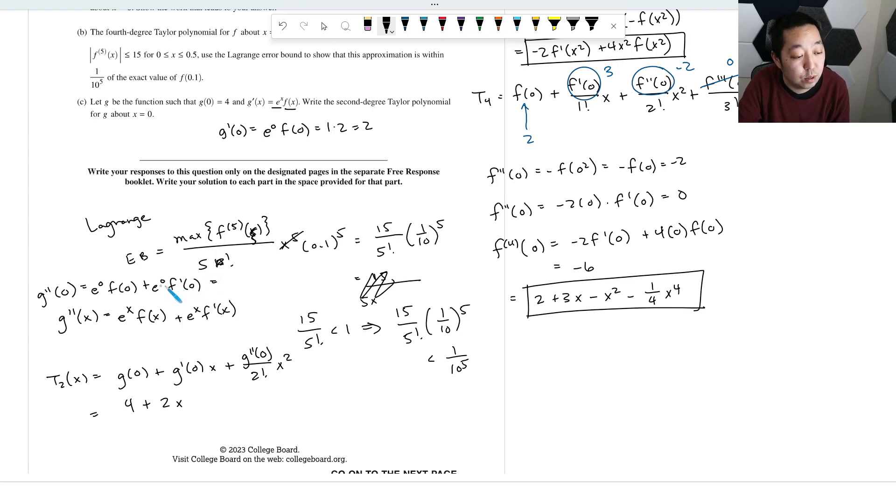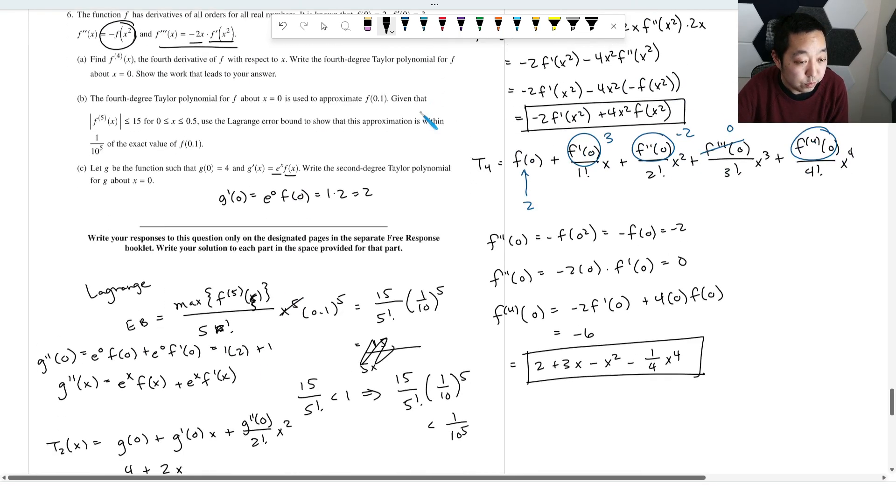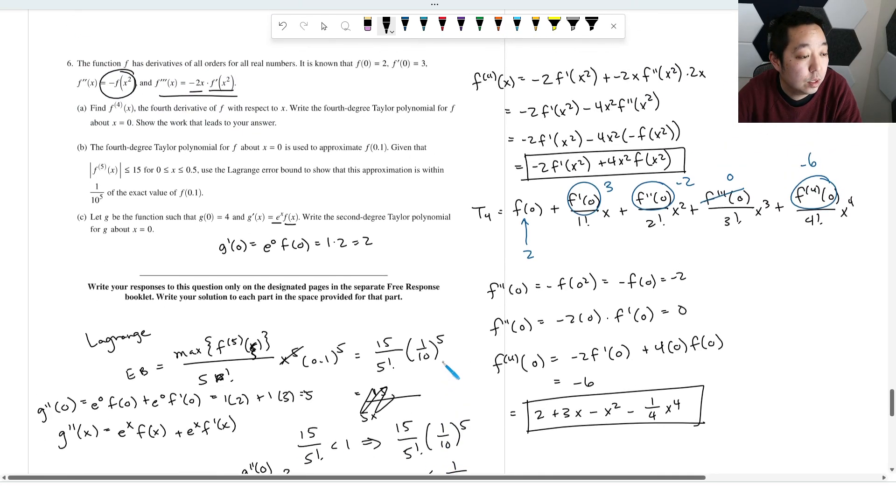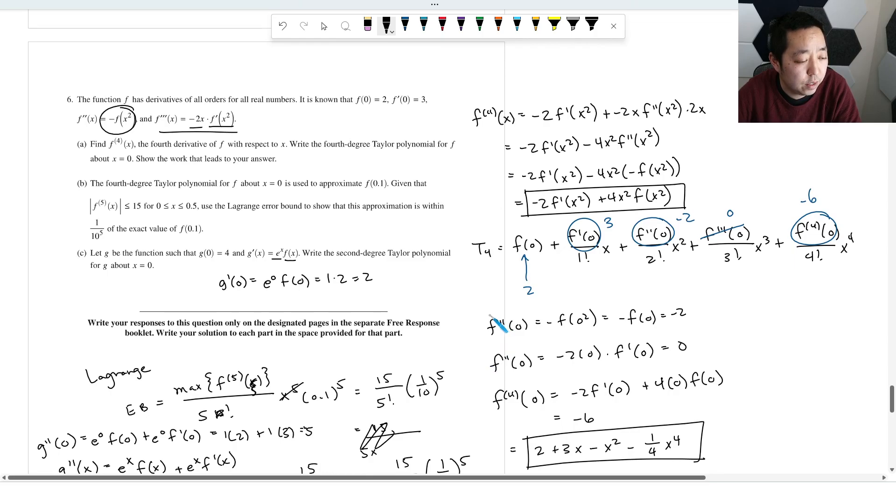That's going to be e⁰·f(0) + e⁰·f'(0). f(0) is 2, so this is 1 times 2 plus 1. What is f'(0)? 3. So this is 5. So this is going to be plus 5/(2)x². And that is our second degree Taylor polynomial there. If I have any mistakes, I'll put it in the comments. But I think that, unless I messed up an algebra, that was generally the right idea.